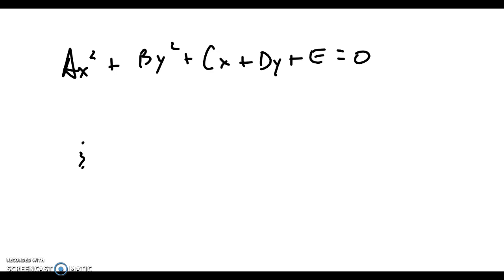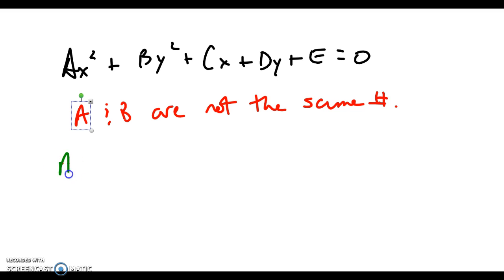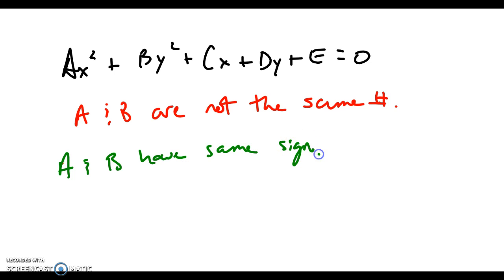Here's your general form of a conic, which is what you saw in the last video. Your job is, first of all, looking at this equation — how do you know if you have an ellipse? You know two ways. One, a and b are not the same number. The second way you'll know is that a and b have the same sign — either a and b are both positive or both negative — then you're going to have an ellipse.